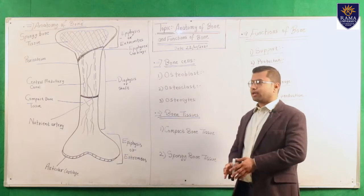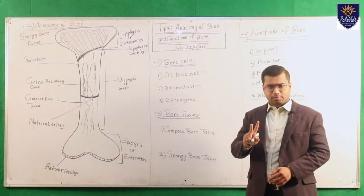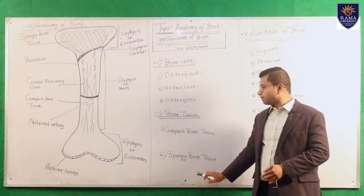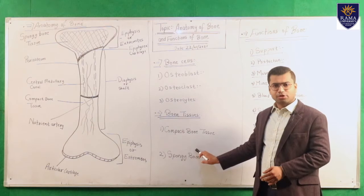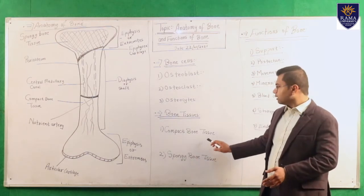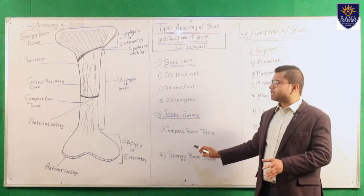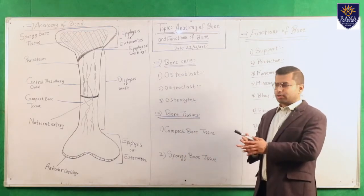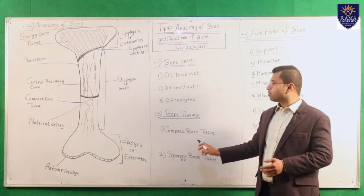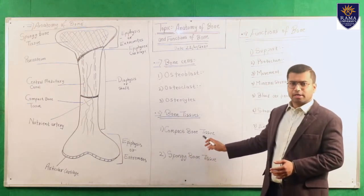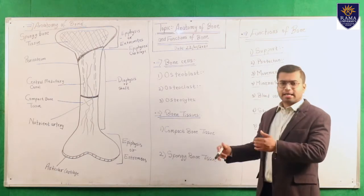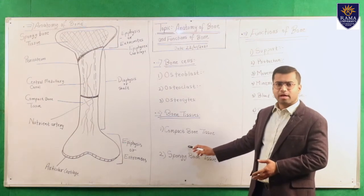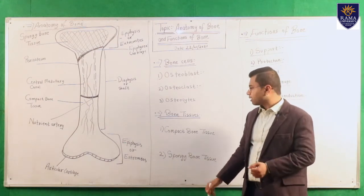Bone is mainly composed of two types of tissues: compact bone tissue and spongy bone tissue. Compact bone tissue constitutes 80% of the bone and is hard in nature. Spongy bone tissue makes up the remaining 20%; it is lighter and spongy in nature.